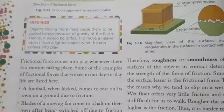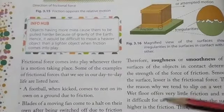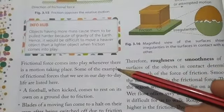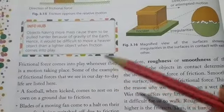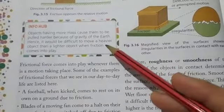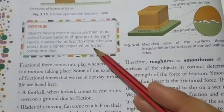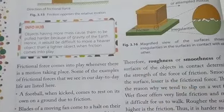It is harder to move an object having more mass because of Earth's gravity acting on that object. So it would be more difficult to move a heavier object than a lighter one when friction comes into play.